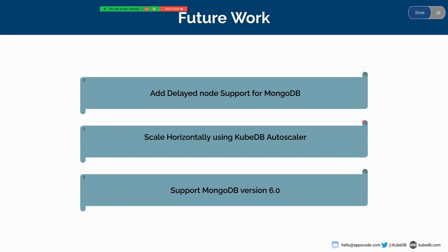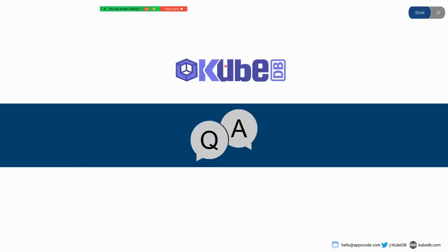For future work, we are going to add delete node support for MongoDB. We are also going to support MongoDB version 6.0, which has been released recently. And we are going to add horizontal scaling using the KubeDB autoscaler. These are the features we are going to focus on in future. This is all I wanted to show you. If you have any questions please go ahead. It seems there are no questions yet in our chat box. With this we are concluding the webinar. Thank you all for your live participation. We hope to see you again next time. Our upcoming webinars are already scheduled on our website — visit appscoot.com/webinar to register. Have a nice day.